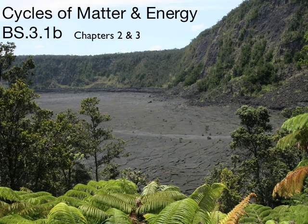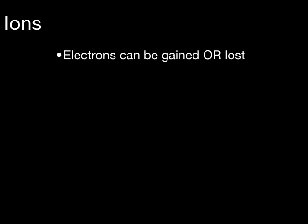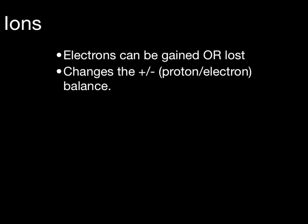In the previous podcast, we discussed how atoms are electrically neutral, because they have equal numbers of protons and electrons. Electrons are an interesting subatomic particle because they can be gained or lost. And when an atom gains or loses electrons, it ceases being an atom and instead becomes an ion.